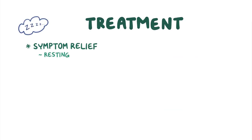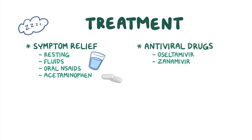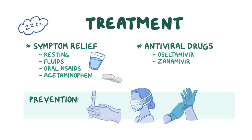Most people with swine or avian flu require only symptom relief — resting, drinking plenty of fluids, and oral NSAIDs or acetaminophen. However, in some severe cases, antiviral drugs like oseltamivir and zanamivir are prescribed to reduce the severity of symptoms and possibly the risk of complications. Preventative measures like hand washing, face masks, proper animal handling, and vaccination are extremely important to avoid zoonotic influenza outbreaks.